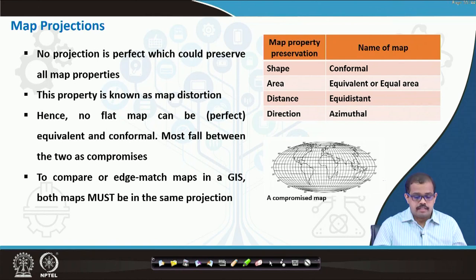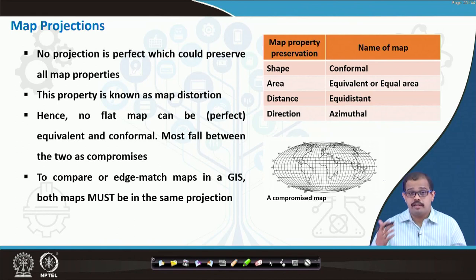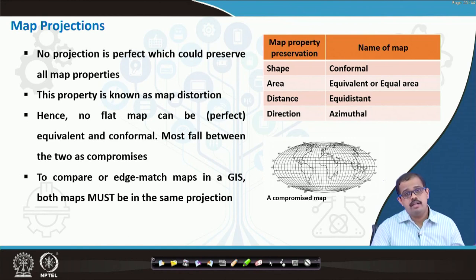Map projections have certain limitations. No projection is perfect — it cannot preserve all map properties, and this property is called map distortion. There are certain distortions where the map property may not be represented in a true form. Any flat map cannot be both perfect, equivalent, and conformal at the same time. Most maps fall between 2 components — either it is equivalent or conformal. No map can be both equivalent and conformal.